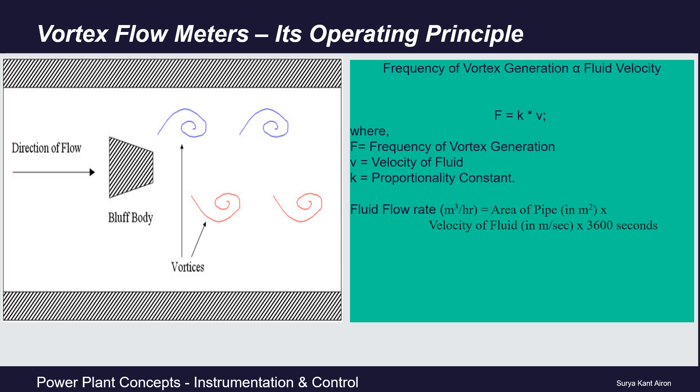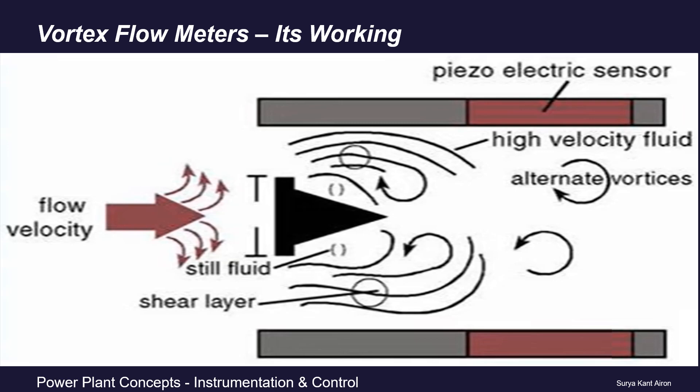Coming to its working in detail: the first part is the obstruction in the flow path. This steel body is called the buff plate or vortex shedder — shown as a delta shape in black color. The working fluid strikes this vortex shedder. If the fluid velocity is low, vortex shedding will not happen, but as the fluid velocity increases above a certain Reynolds number, the vortices start shedding.